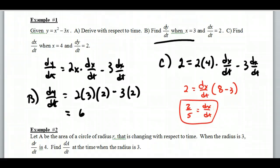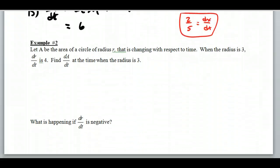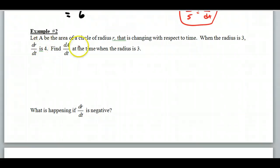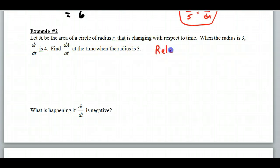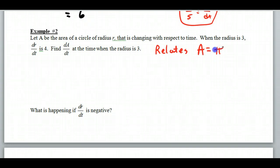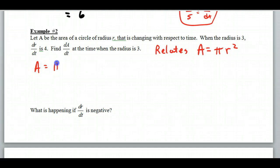That's what we're going to be doing — it will get a little more complicated; some of it's the interpretation of problems. Let A be the area of a circle changing with respect to time. When the radius is 3, dr/dt = 4. Find dA/dt at the time when the radius is 3. We need something that relates all these things together — if I'm talking about a circle and the area, what relates area with respect to radius? Area equals πr². That's the related equation, and then we do the related rates. When I differentiate this, people start running into trouble.